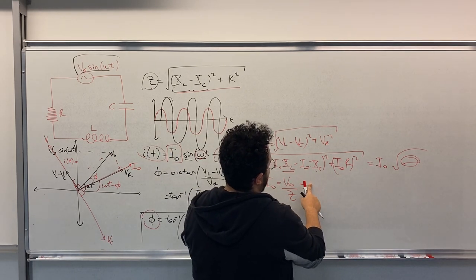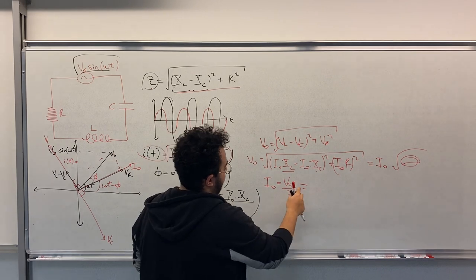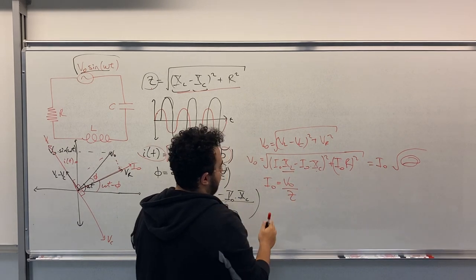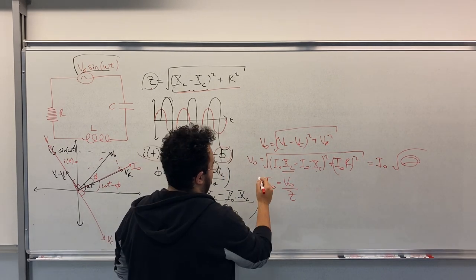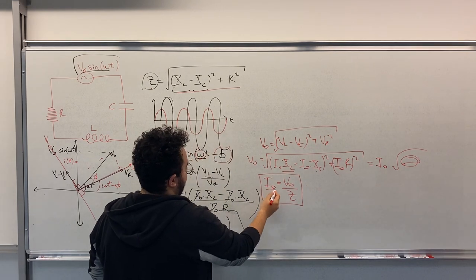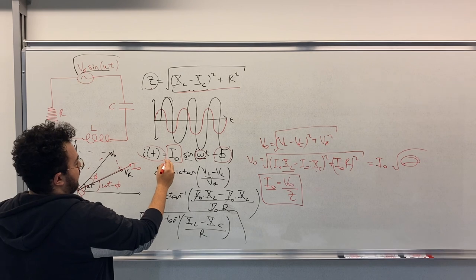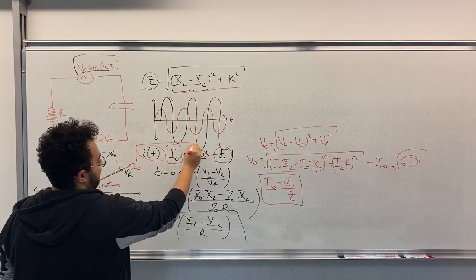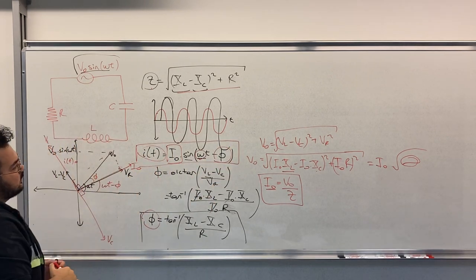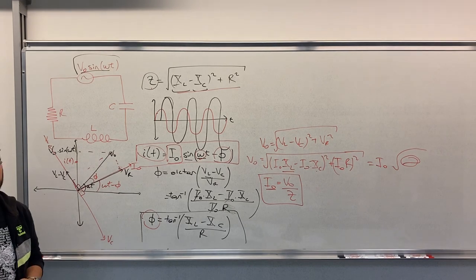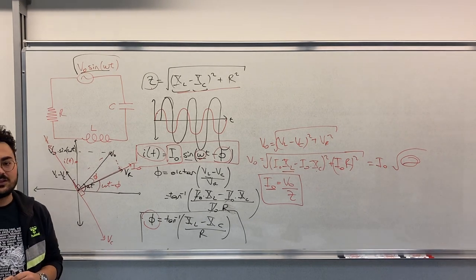But when you have the component values, you will find a value here. So let's just stay here. This is how you find I0. So you have all the unknowns in the expression here. So we have found the current in the circuit. Thank you for listening.